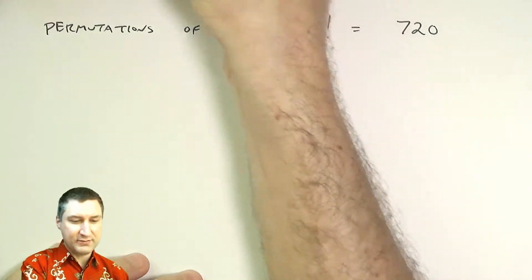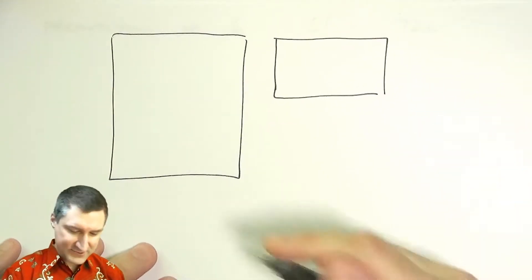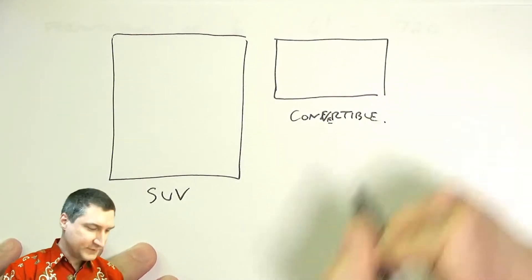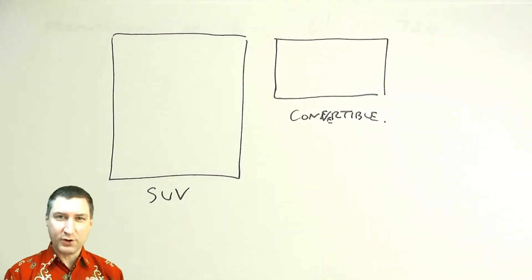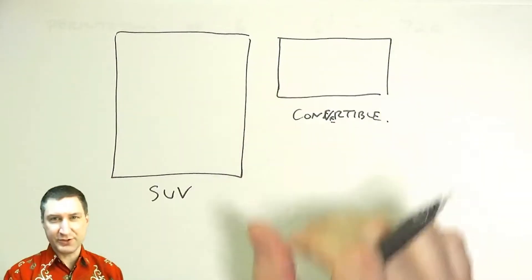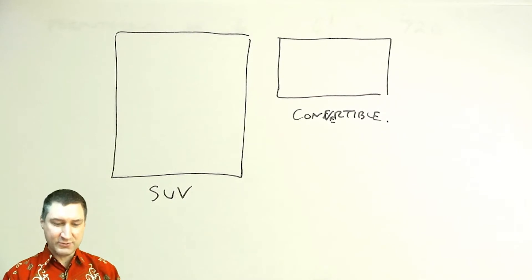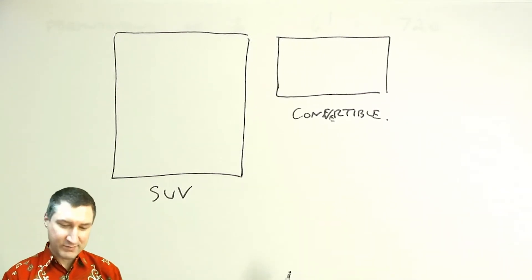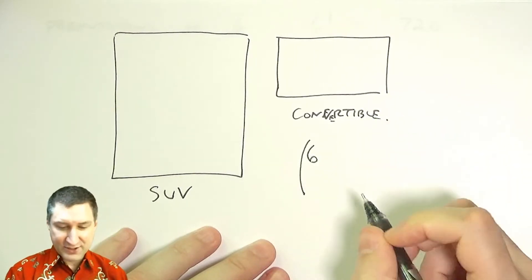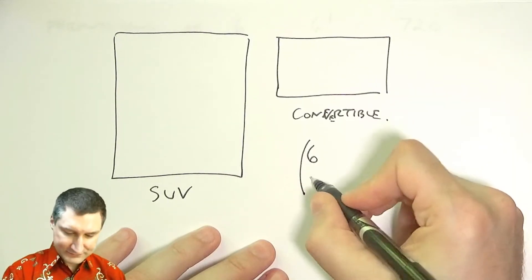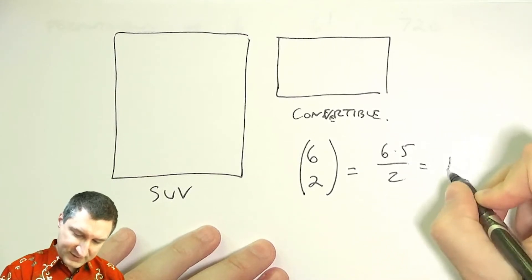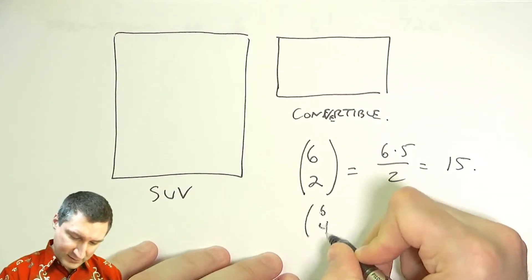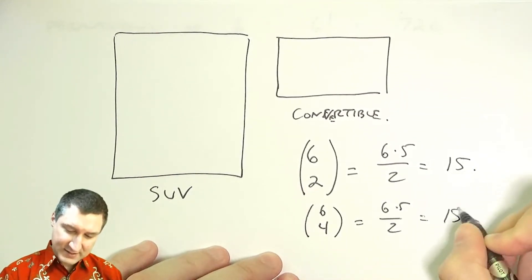Now suppose the Avengers are going to battle in two cars: an SUV that fits four people and a convertible that fits two. How many ways are there to assign who goes in which car, where order doesn't matter? I just need to choose which two go in the convertible — that's 6 choose 2 = (6×5)/2 = 15 possibilities. You could also compute 6 choose 4, which gives the same answer by symmetry.